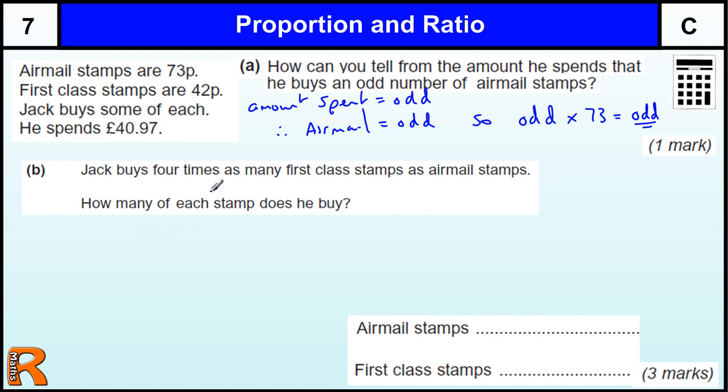Okay, so this part B, we got four times as many first class stamps as airmail stamps. So I'm going to show you two ways of doing this. If we have called the number of airmail stamps x, then we have four times as many that are first class.